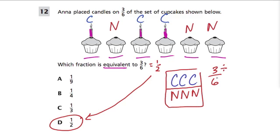The way you reduce fractions is you divide the numerator, the top number, and the bottom number by a common factor. In this case, three and six both have the same factor of three.